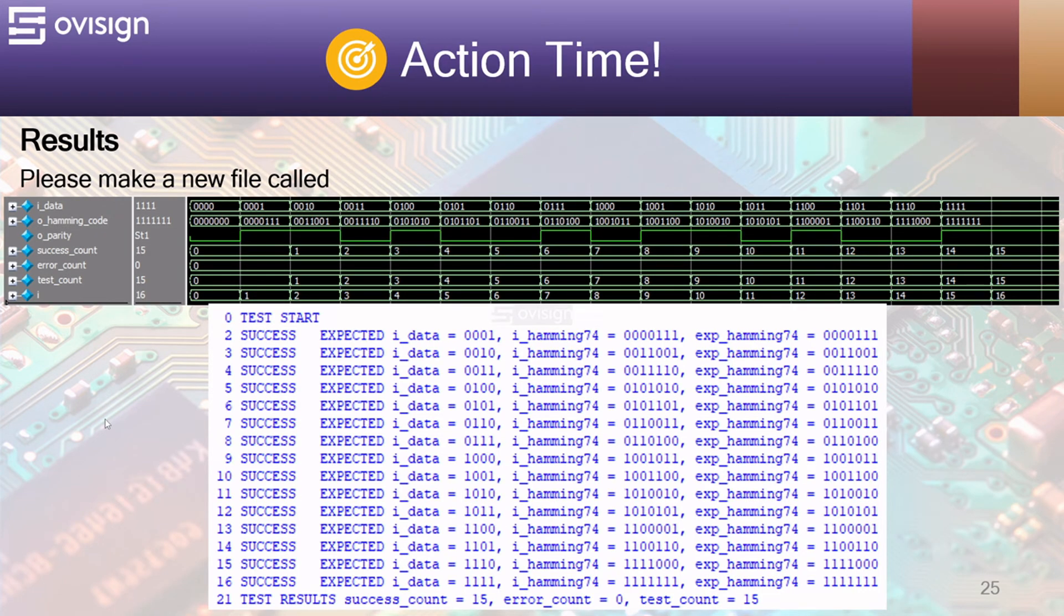These are the results of our self-checking test bench. You can see in the wave and in the console how we sweep the input data from 0 to 15 and what is the result of each individual test. In the end we report 15 past tests. Take your time and analyze the inputs and the outputs of this Hamming encoder.